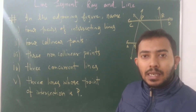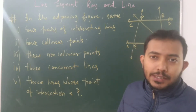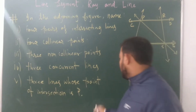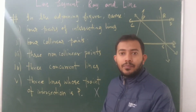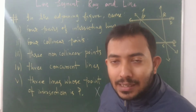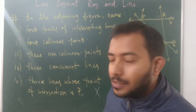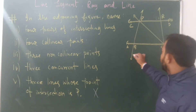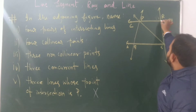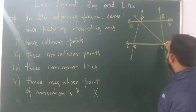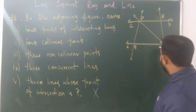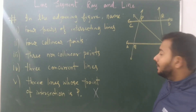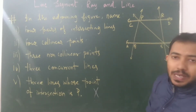The first one is intersecting lines. Let's recapitulate — intersecting lines means two lines that have a common point. So here you can see one common point of this line and this line. Here also, two lines share a common point. But here three lines meet, which means they are concurrent as well as intersecting if you take any two of them.